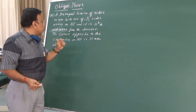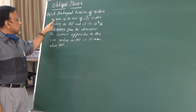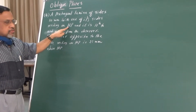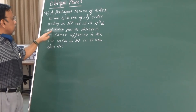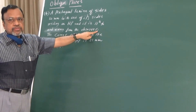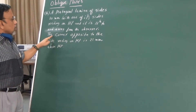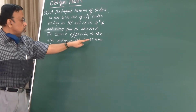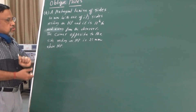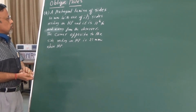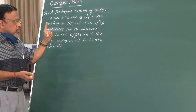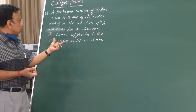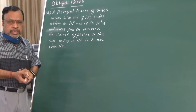Let us go to this problem. A pentagonal lamina of sides 30 mm with one of its sides resting on HP and it is parallel to and away from the observer. The corner opposite to the side resting on HP is 25 mm above HP. Now, as you can see, I have not given any inclination with reference to either the plane or to the side.